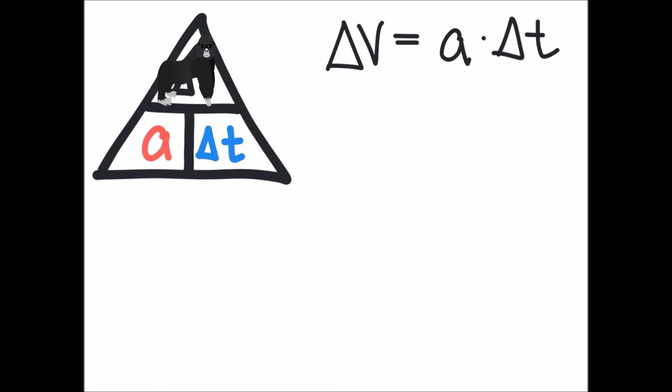Next, what we're going to do is look for the change in time. We're going to place our hand or the gorilla over the variable we're looking for. That will give us delta t equals delta v over a.